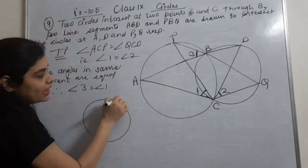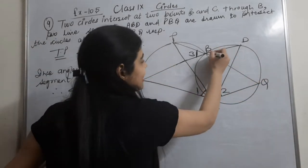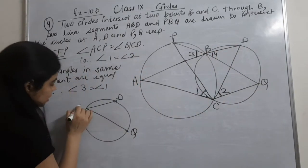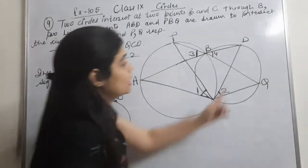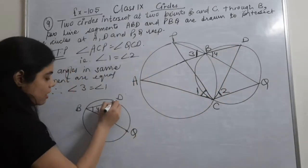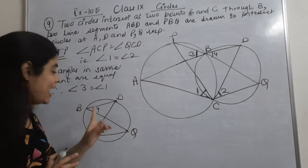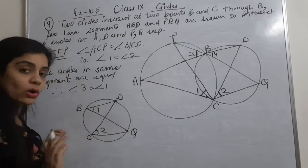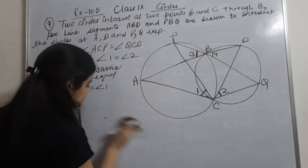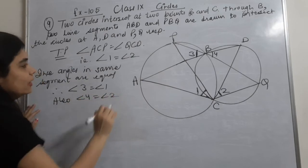Now considering the small circle, this is D and this is Q — the DQ arc. Angle DBQ (angle 4) and angle DCQ (angle 2) are angles in the same segment. With the same reason — angles in the same segment are equal — angle 4 is equal to angle 2.